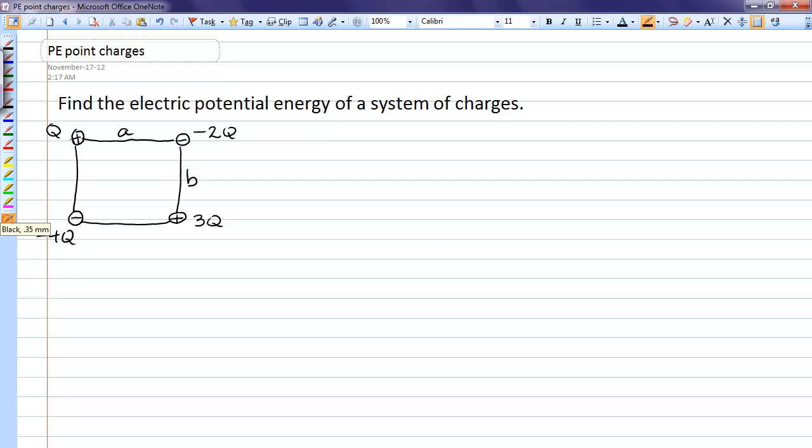The formula on the formula sheet that we're using is that the potential energy of a pair of charges, 1 and 2, is equal to KQ1Q2 over R12.